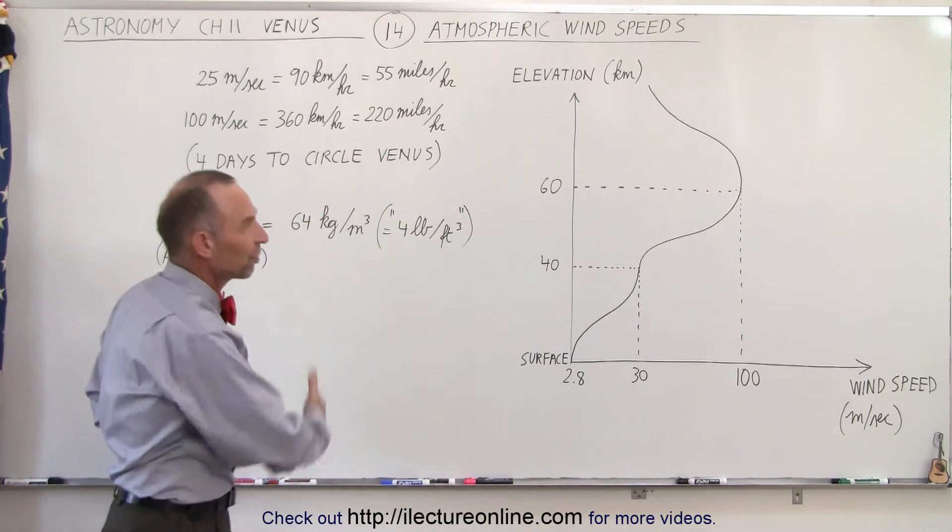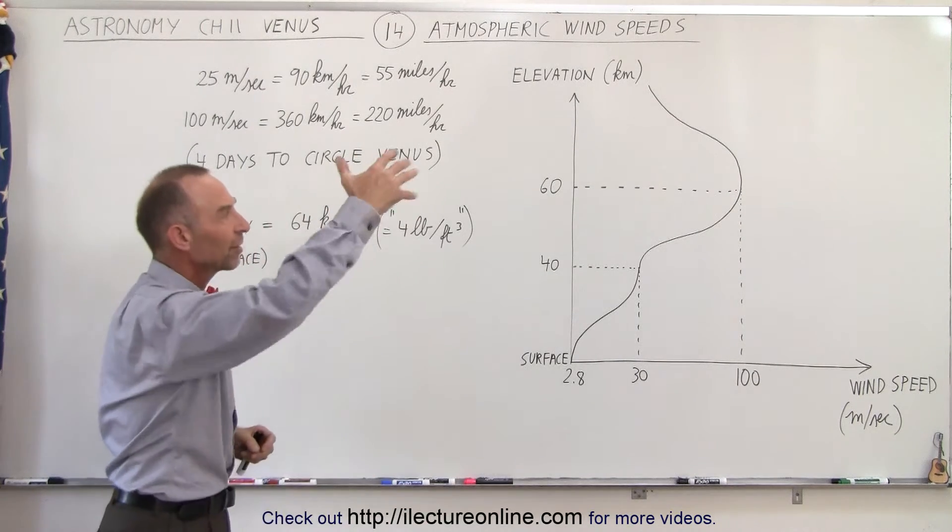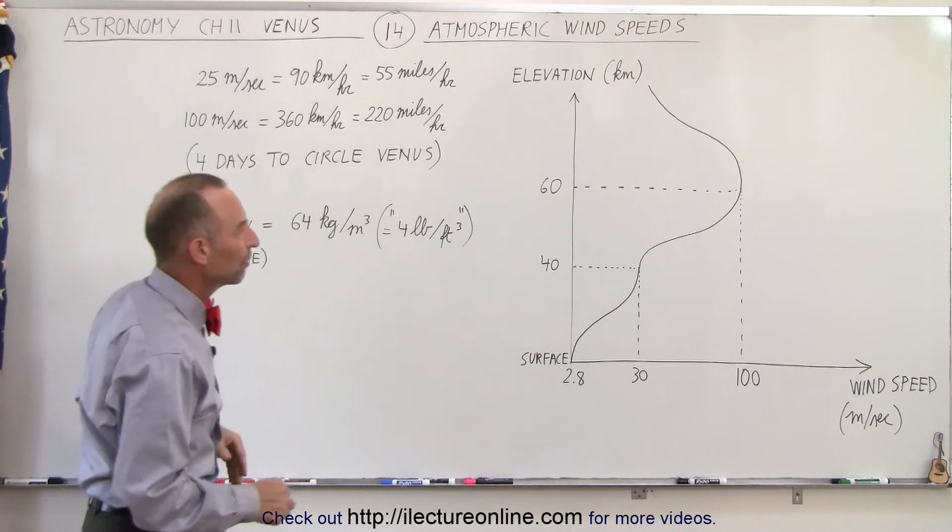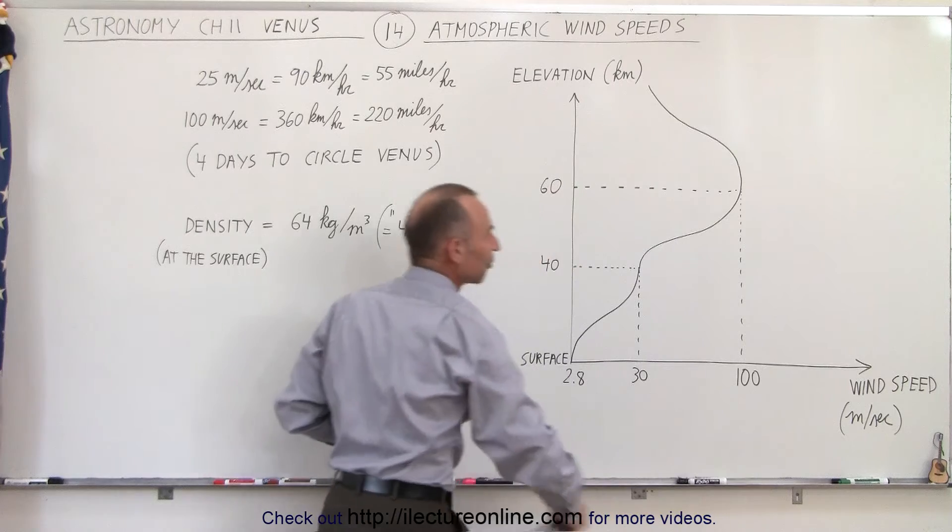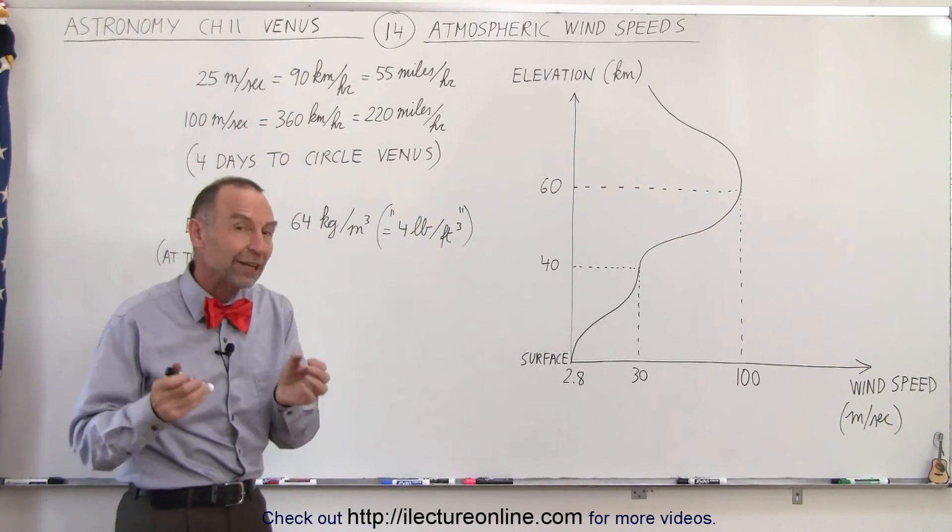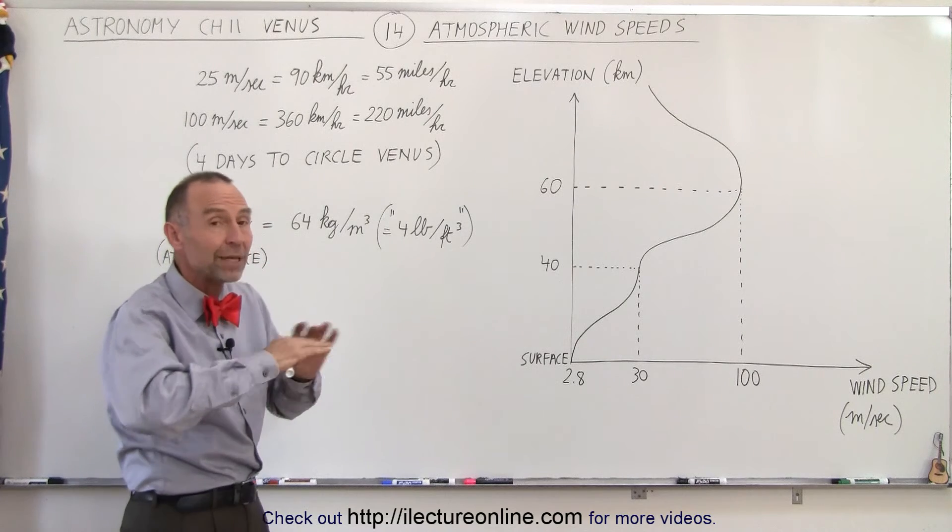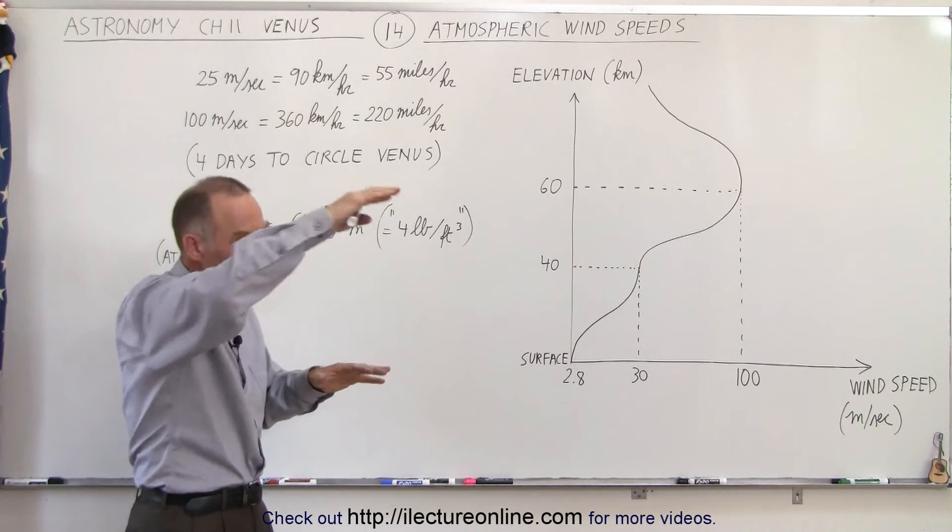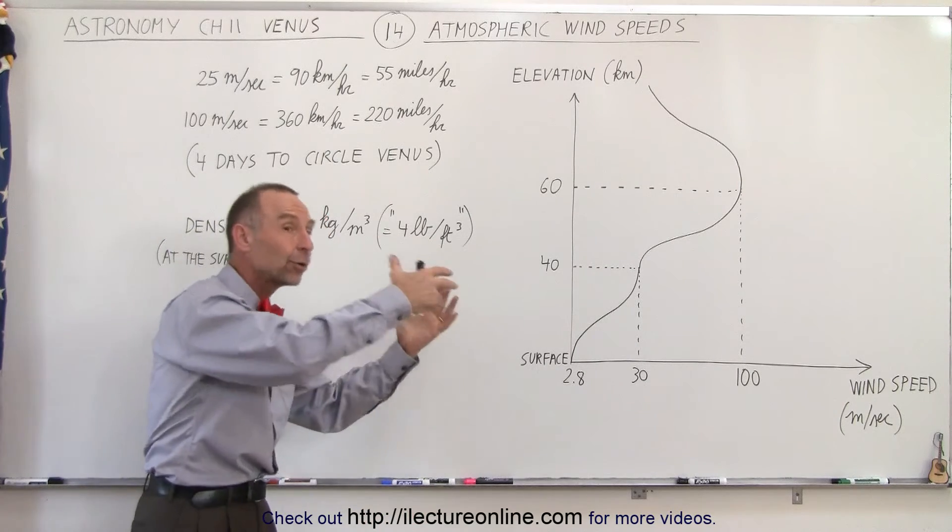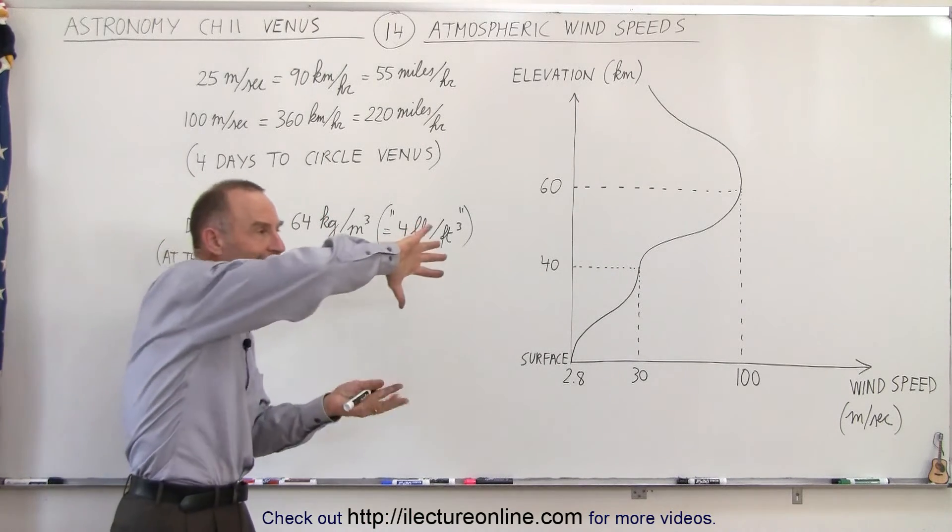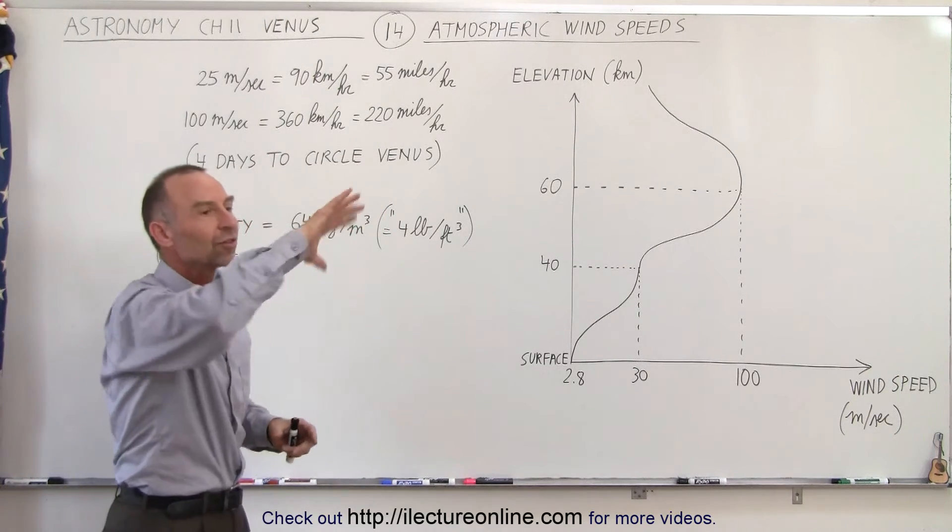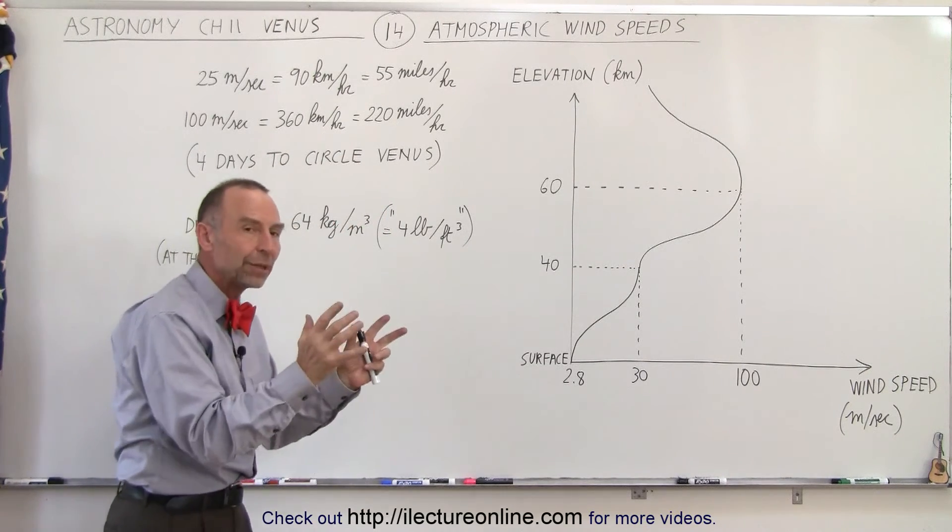This causes the atmosphere to circulate and circumvent the planet about once every four days. So if you're at a height of about 60 kilometers, the atmosphere will go around the planet once every four days. We believe that is one of the reasons why it appears that the temperature is pretty well the same all the way around the planet, on the day side or the night side, because all that heat gets transferred with the atmosphere all the way around the planet, which causes the heat not to stay in one place.